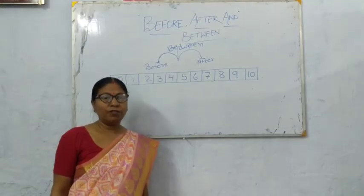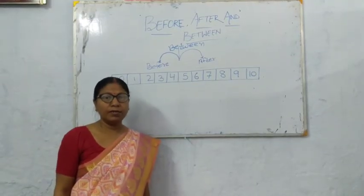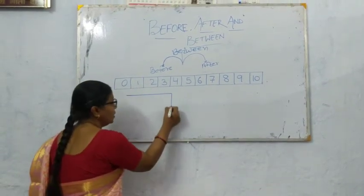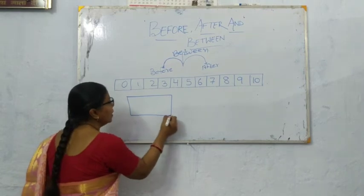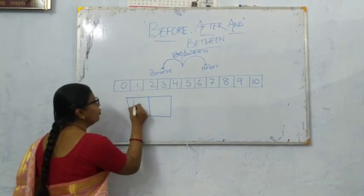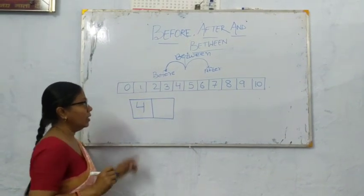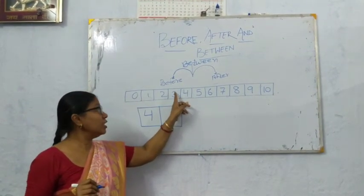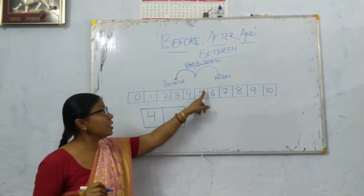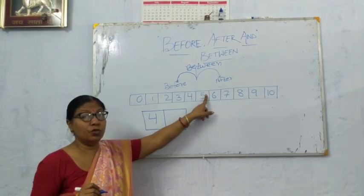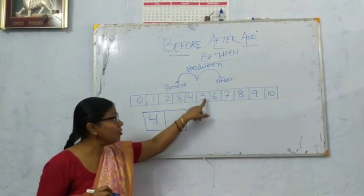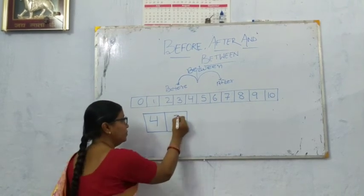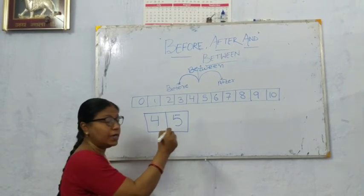Now we will see which number comes after. Taking example 4 — check the number strip. Which number comes on the right side of 4? The answer is 5.